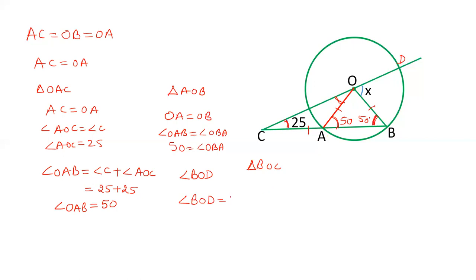That is angle C plus angle OBC. We have just calculated angle OBC as 50 degrees. Angle C is given as 25. Angle BOD is x. So x equals 75. The value of this angle is 75 degrees.